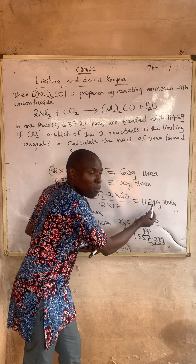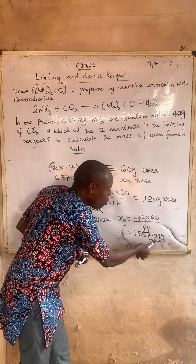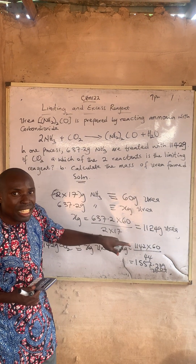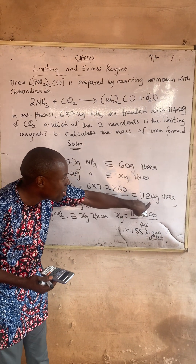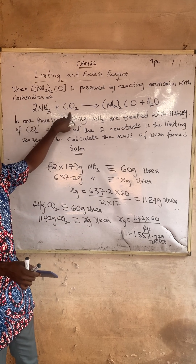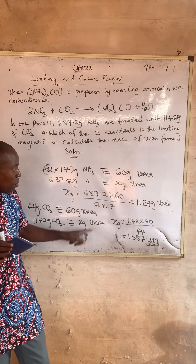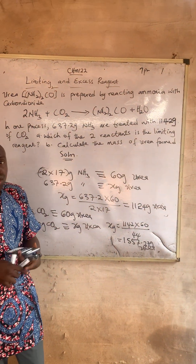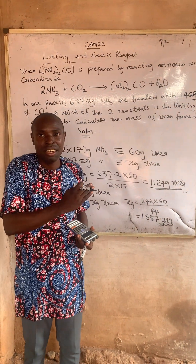Now look at this. Between the mass of Urea obtained from ammonia and the mass of Urea obtained from CO2, the limiting reagent is the one that gives the smaller mass of Urea, which is ammonia — giving 1124 grams, compared to CO2 giving 1557.27 grams. So ammonia is the limiting reagent while CO2 is the excess. Since I've identified the limiting reagent, the mass of Urea formed is 1124 grams. Thank you and God bless you.